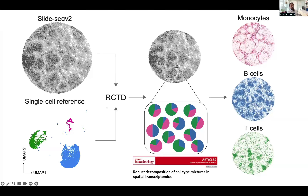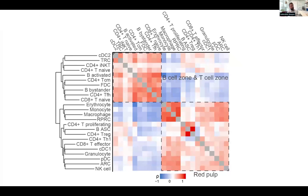The upshot of that analysis is this sort of data. Along each axis is every cell type defined from our single cell RNA sequencing reference. In red, if cells are co-located consistently across the array, they'll appear more red; if anti-correlated, they'll be blue. What we see in this correlation plot for an infected spleen is actually merging of B cell zones and T cell zones — areas that are normally quite distinct in an uninfected spleen.